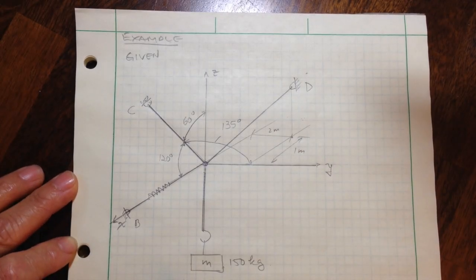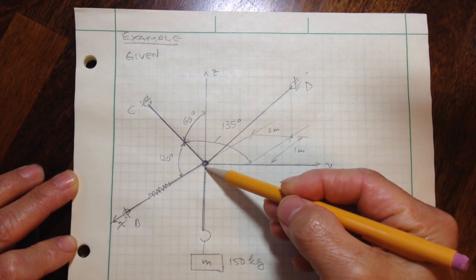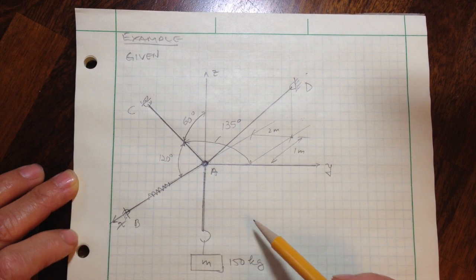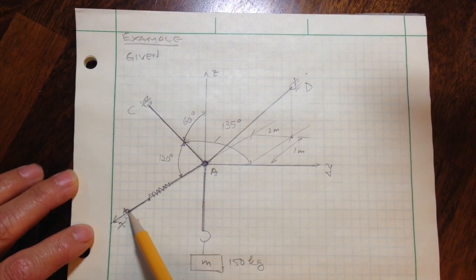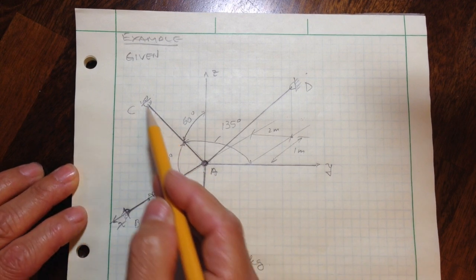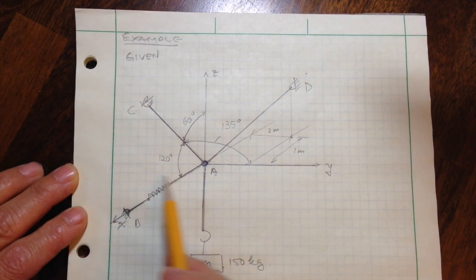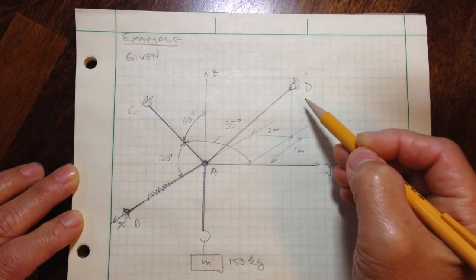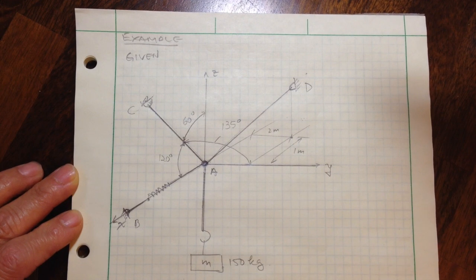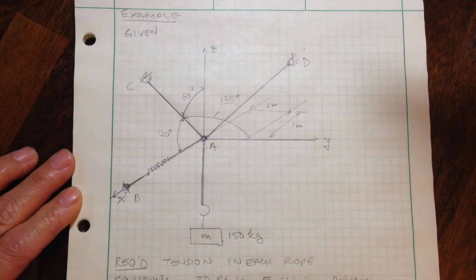Let's consider this system where at the origin, we'll call that point A, there's a ring, and there are four cables attached to it. Cable B also has a spring attached to it, and that spring is attached to a support that lies along the X axis. Cable C is in the back quadrant, attached to a fixture at C. Cable D is located in the back quadrant of the YZ plane, fixed to point D with the dimensions shown. Cable A has a hook with a mass of 150 kilograms hanging from it.